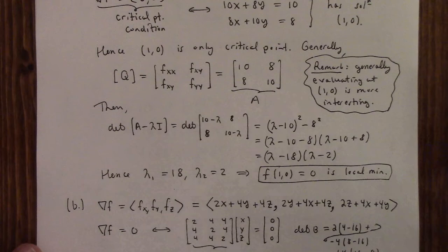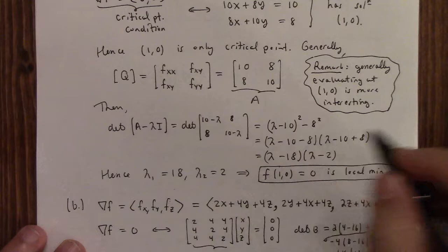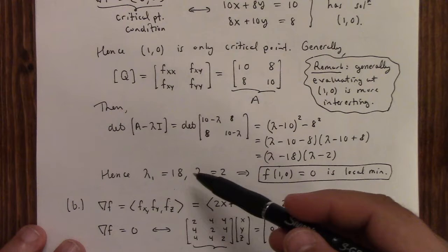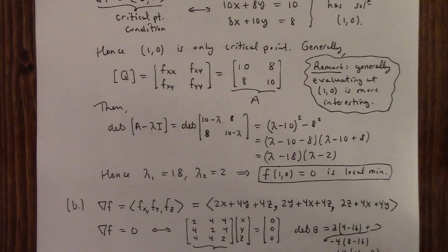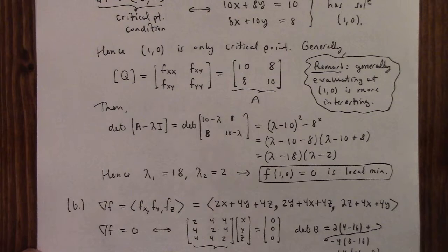Because what this essentially tells us is that the quadratic form corresponding to the Hessian can be written as like 2 times 18 times x̄₁ squared plus 2 times x̄₂ squared. So if you think about values close to the point, they're going to be increasing off that critical point because both are positive.